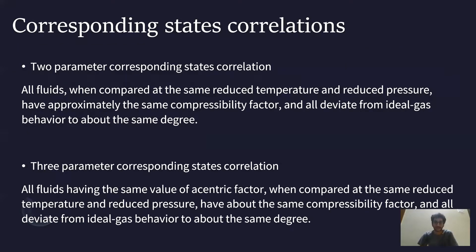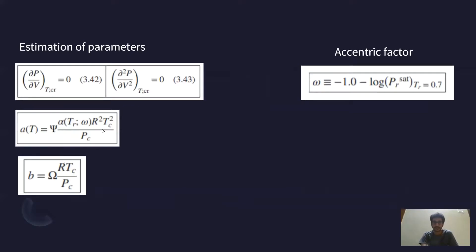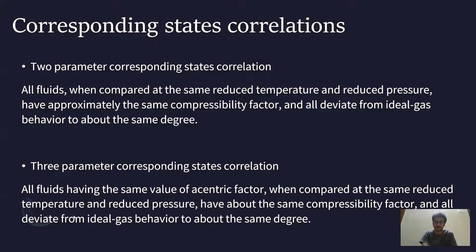The corresponding states correlation: the two-parameter corresponding states correlation states that all fluids, when compared at the same reduced temperature and reduced pressure, have approximately the same compressibility factor and deviate from ideal gas behavior to about the same degree. In the two-parameter model, we only consider Tr and Pr — we are not considering ω. When we also incorporate ω, it becomes a three-parameter corresponding states correlation, which states that all fluids having the same acentric factor, when compared at the same reduced temperature and pressure, will have the same compressibility factor and deviate from ideal gas behavior by the same amount.